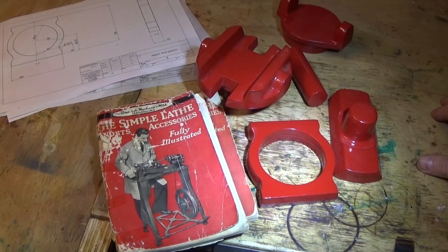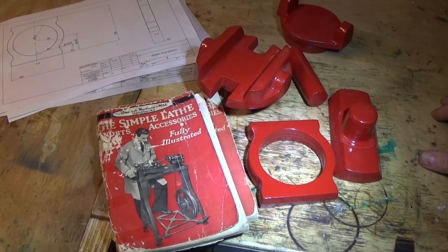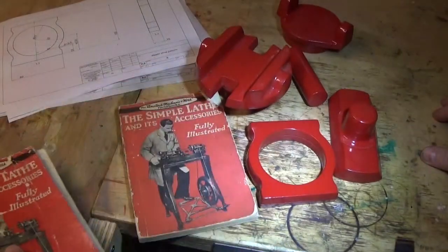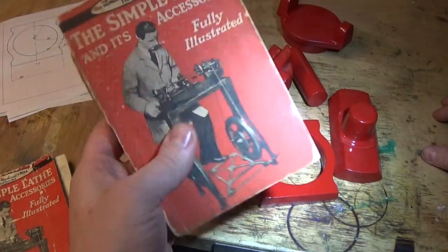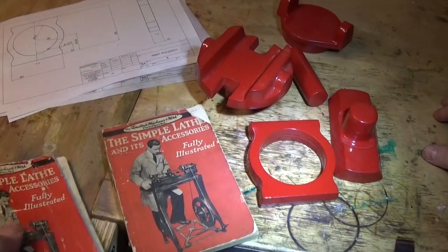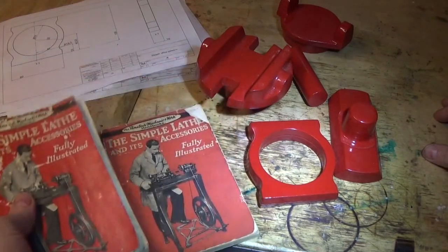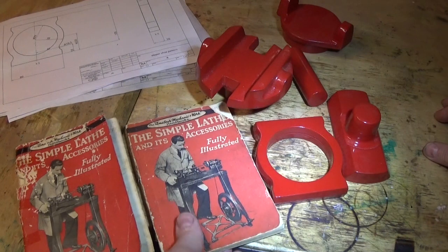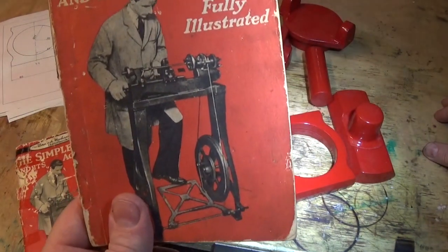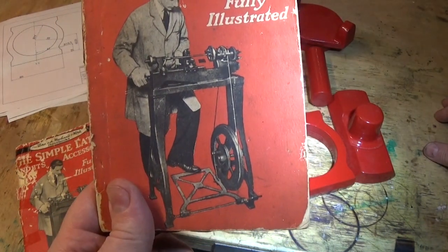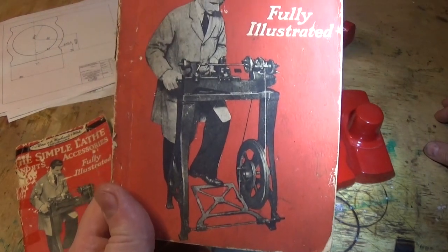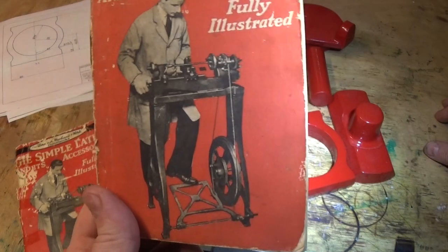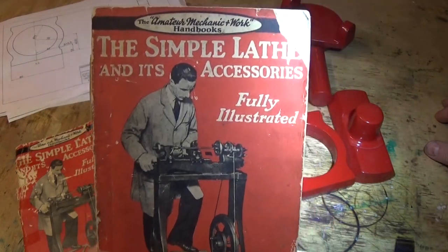This is an accessory for the lathe. I was given this book recently. I've got two copies and they're both exactly the same - one's Australian and one's English. They've got the same gentleman in his dust coat and shiny shoes and necktie on the front. It's called The Simple Lathe and Its Accessories, Fully Illustrated. It's not a bad book.